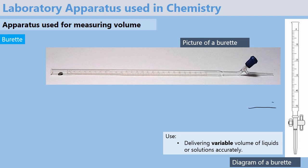When you look at this diagram, I want you to focus on the levels. At the top we have 0, meaning when this burette is filled with liquid or solution to this level, we can read the volume as 0 milliliters or 0 centimeters cubed. However, when this tap is opened, the liquid flows out of the burette into another container. When the tap is closed, you read how much volume of liquid has been delivered — in this case, it would be 20 cubic centimeters if the level has dropped to this level.